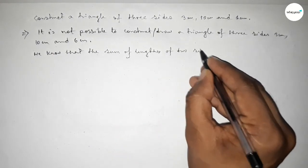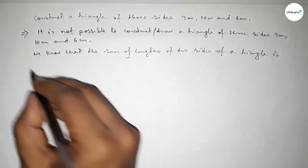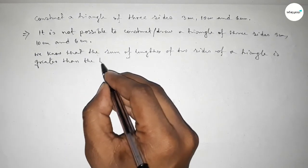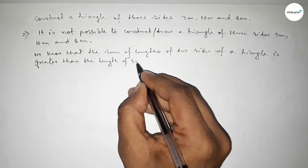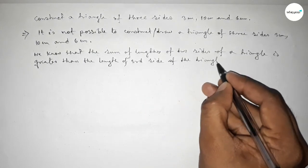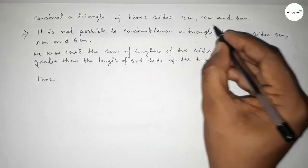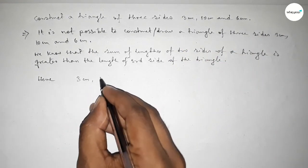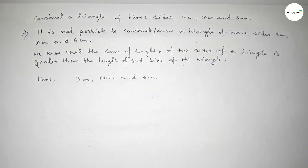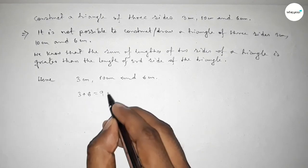We know that the condition to construct or draw a triangle is that the sum of the lengths of any two sides must always be greater than the length of the third side. This is the condition to construct or draw a triangle. The given three sides are 3 centimeters, 10 centimeters, and 6 centimeters.